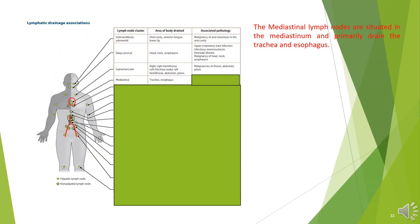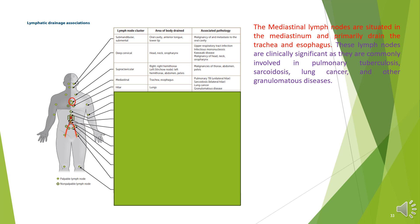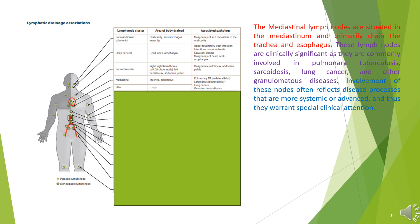Mediastinal lymph nodes. The mediastinal lymph nodes are situated in the mediastinum and primarily drain the trachea and esophagus. These lymph nodes are clinically significant as they are commonly involved in pulmonary tuberculosis, sarcoidosis, lung cancer, and other granulomatous diseases. Involvement often reflects disease processes that are more systemic or advanced.